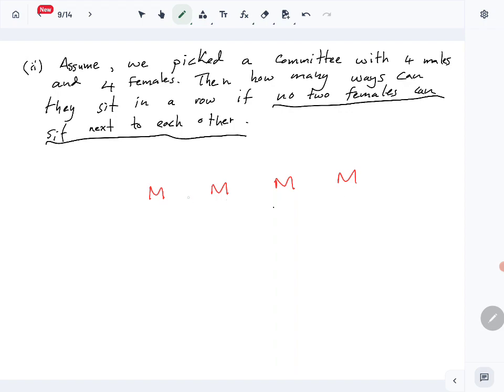So these are the males. Females have to be in between the males if they can't sit next to each other. There are five positions for the females to sit—one, two, three, four, five. We have five positions but only four females.